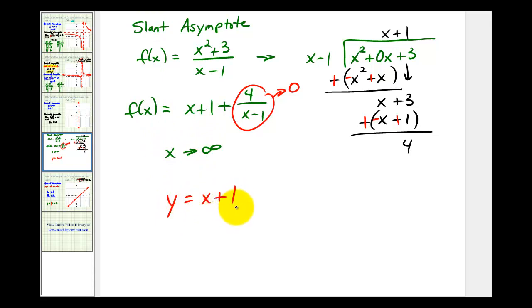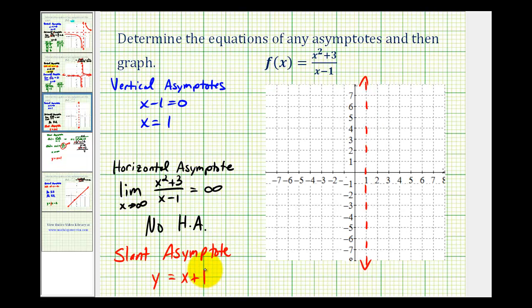We have a y intercept of positive one, and we also have a slope of one or one over one. So we'll go up one, right one, up one, right one. Our slant asymptote is going to pass through these points. It might look something like this.